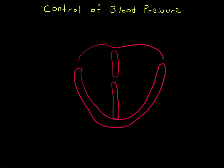Let's talk about the control of blood pressure. This is a follow-up to our previous discussion, and we're going to talk first about the control of cardiac output as we described it in our last video. Let's start with the contribution of the sympathetic nervous system.